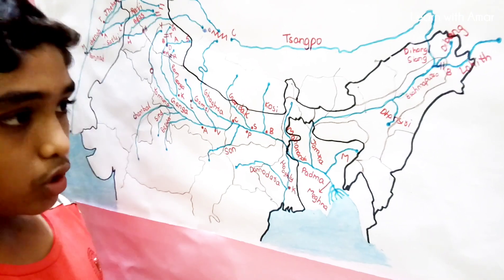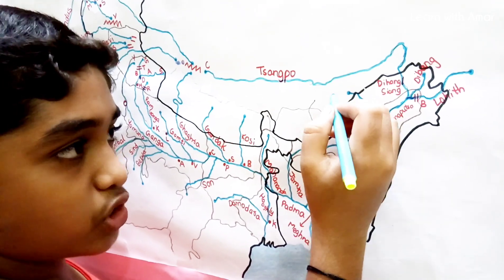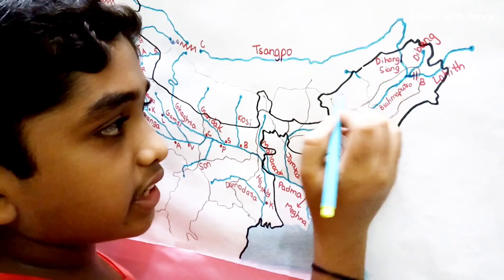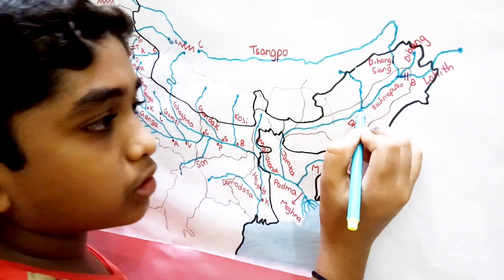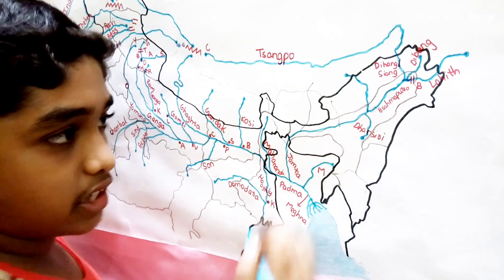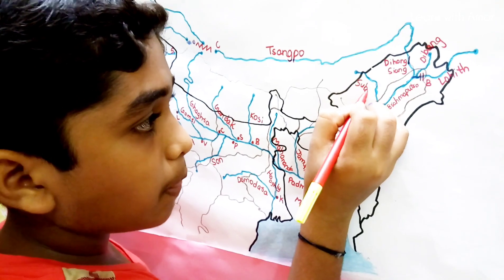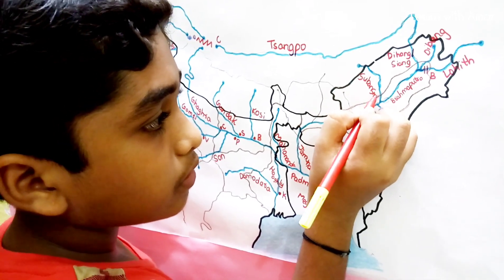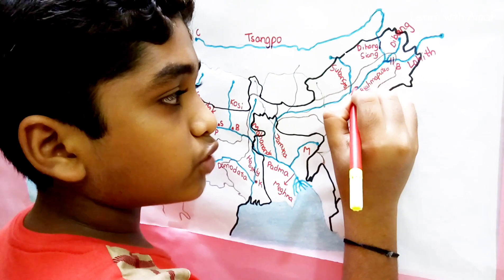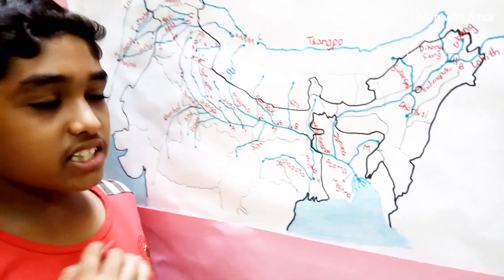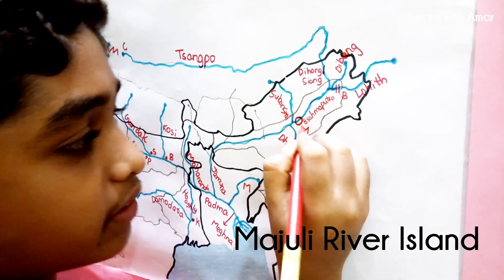Now let's look at the Right Bank tributaries. The first one originates in Tibet, enters India in Arunachal Pradesh, flows through Arunachal Pradesh and Assam, and joins the Brahmaputra near the mouth of Dhansiri. Its name rhymes with Dhansiri — it is Subansiri. Before the mouths of Subansiri and Dhansiri, there is a river island — the largest river island in the world. It is Majuli River Island.